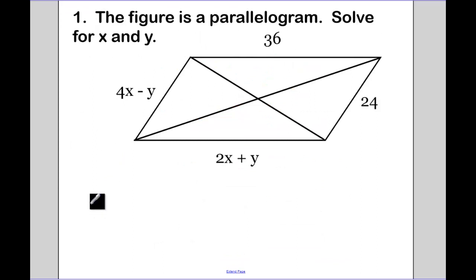First example. The figure is a parallelogram, solve for X and Y. Well, look at what we know. We know that the opposite sides of a parallelogram are going to be congruent. So setting up our equation, 2X plus Y equals 36 because opposite sides are congruent.